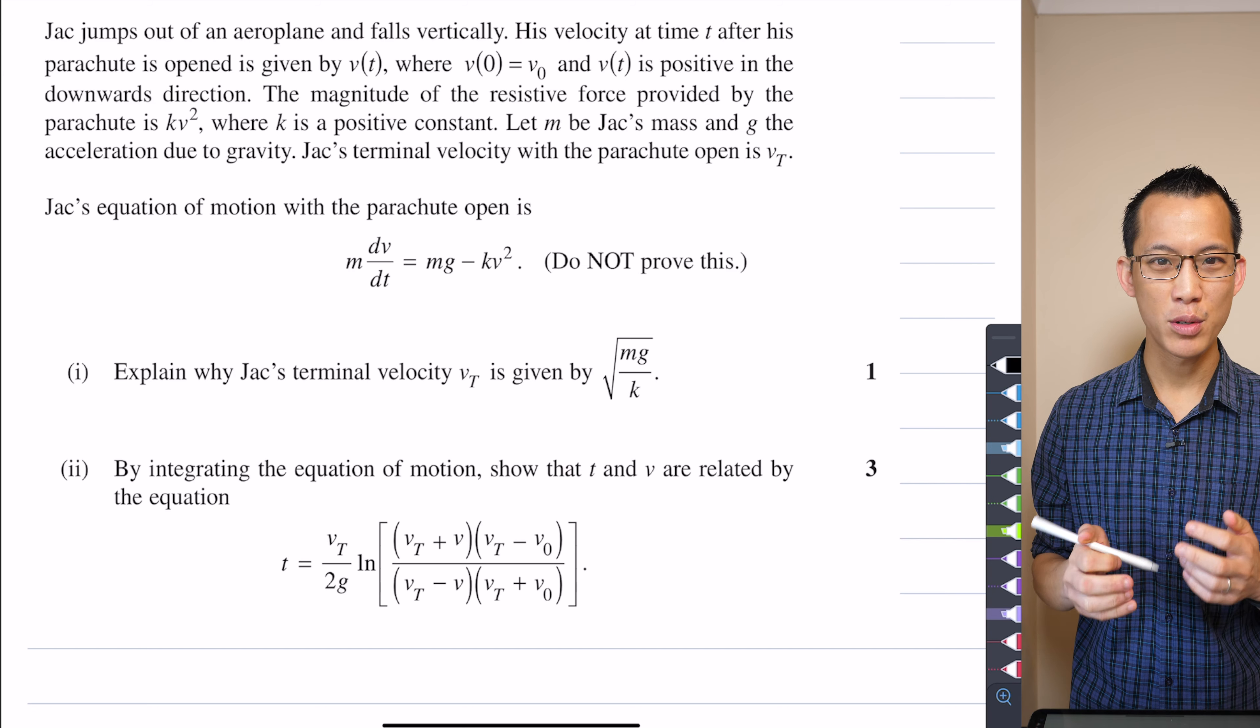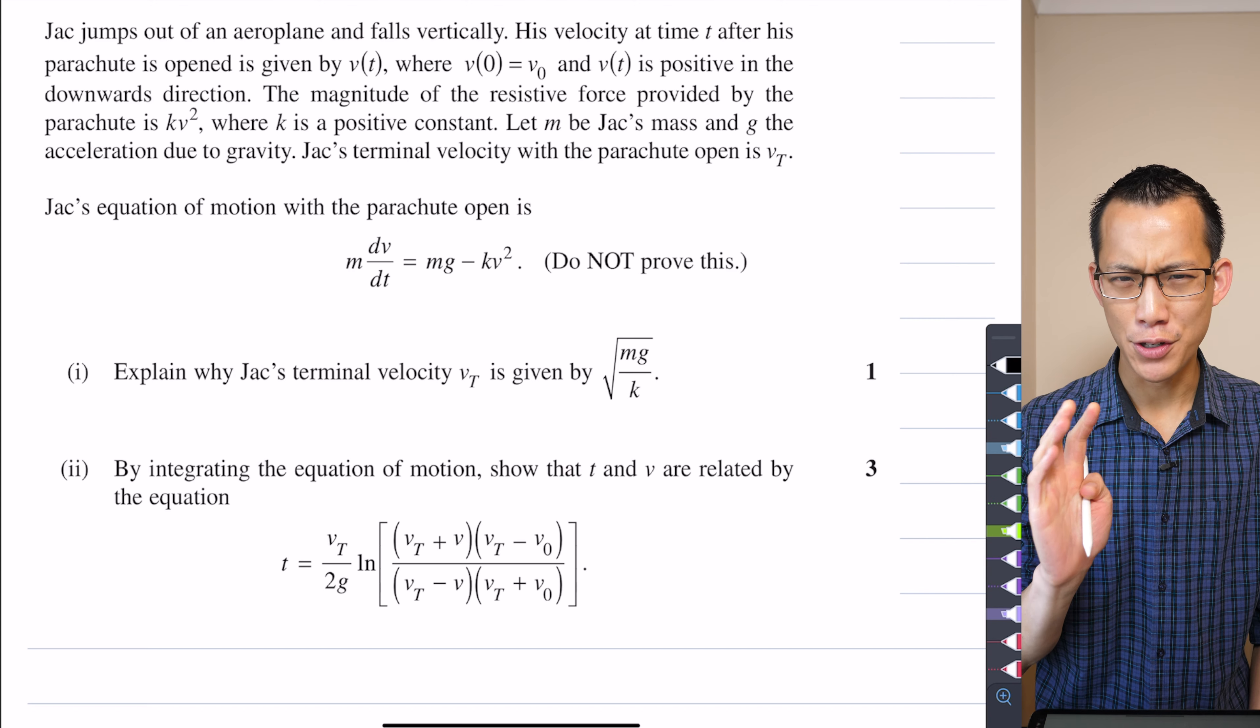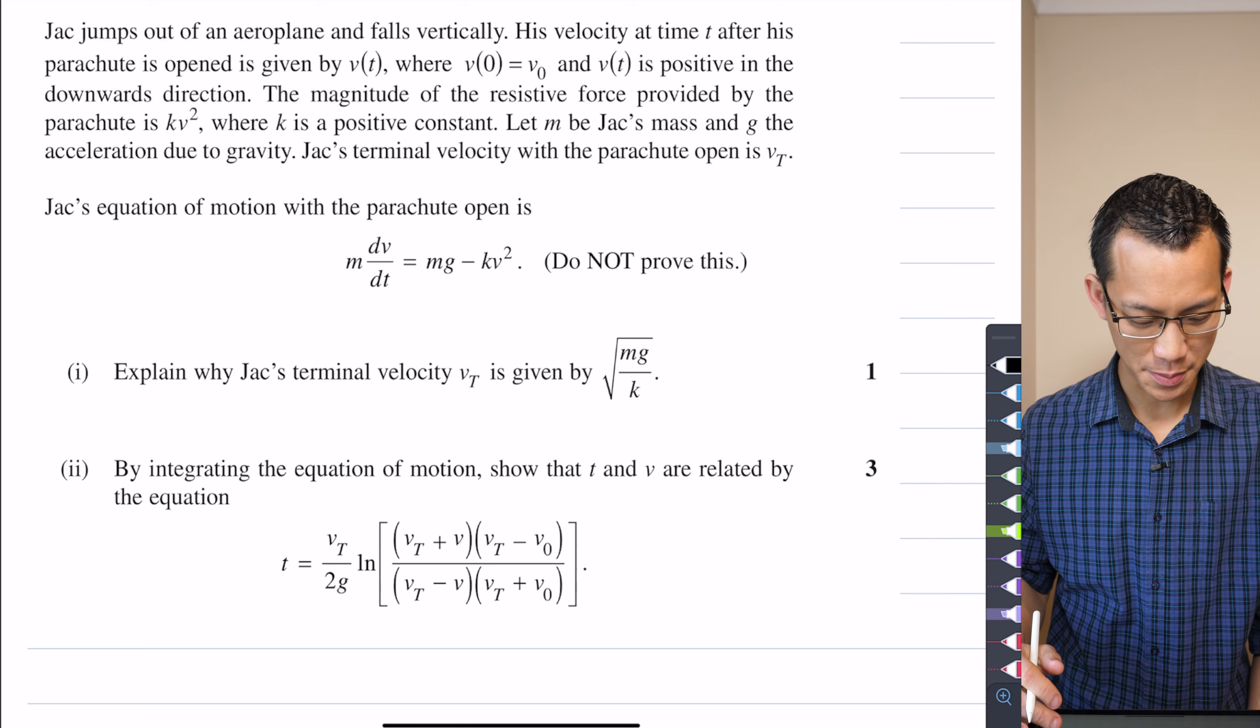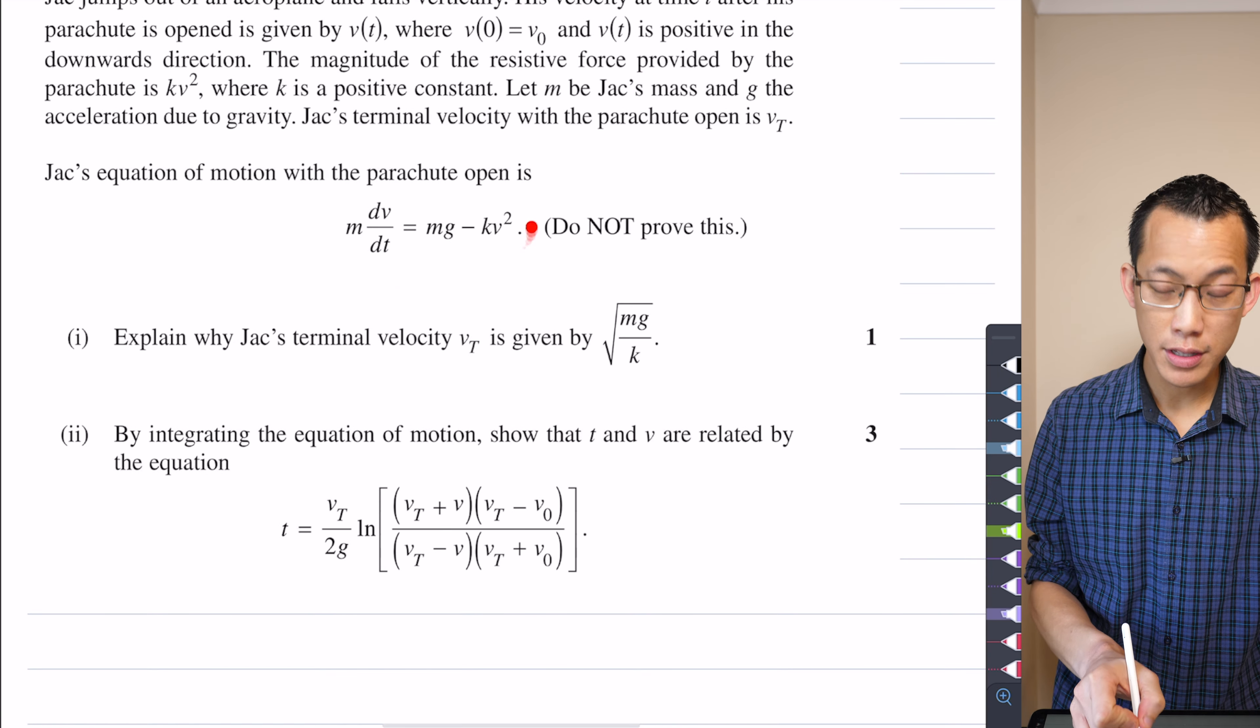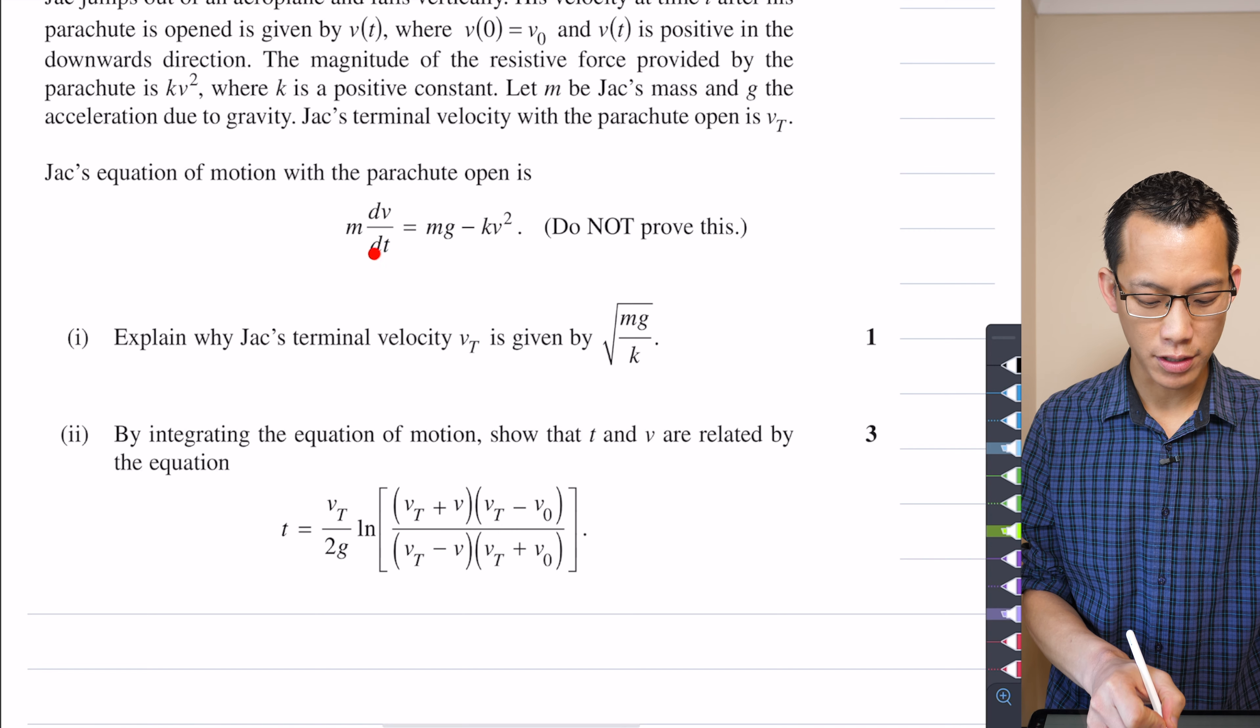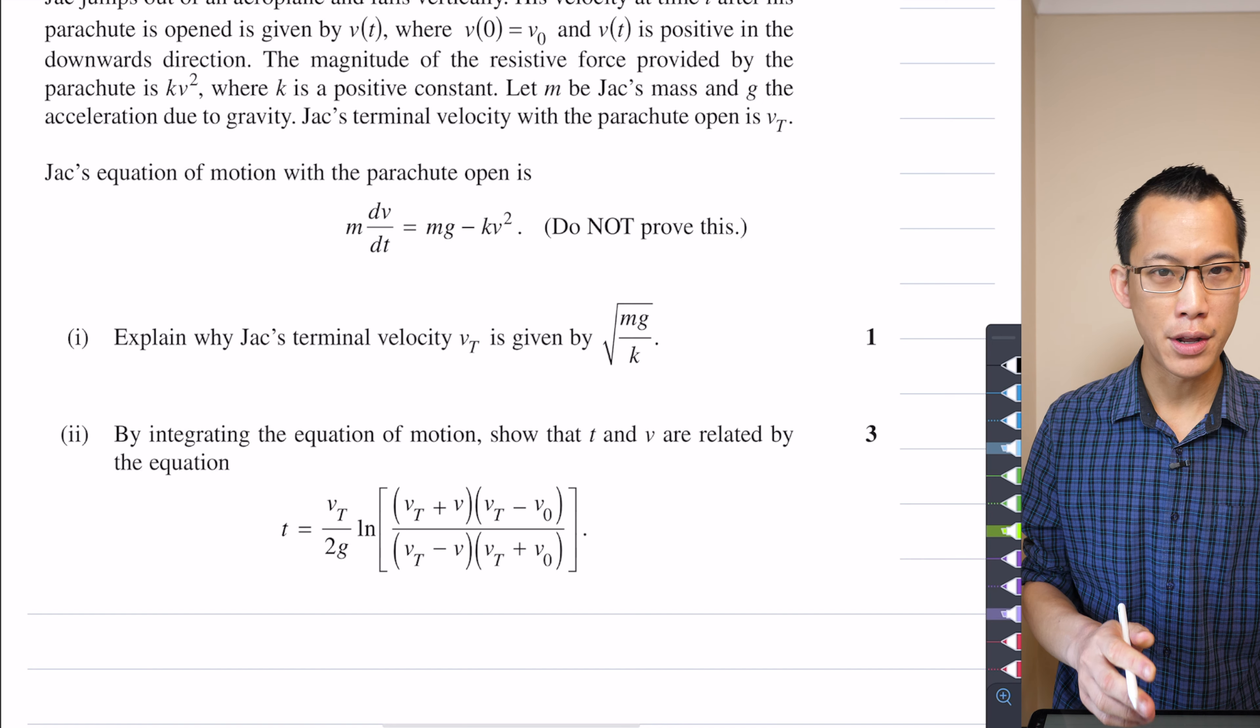So just to review, we've got this equation of motion that's been handed to us, force on the left-hand side, mass times acceleration. And then you've got your two vertical components, one going up, one going down, noticing that they've defined for us, VT is positive in the downwards direction.